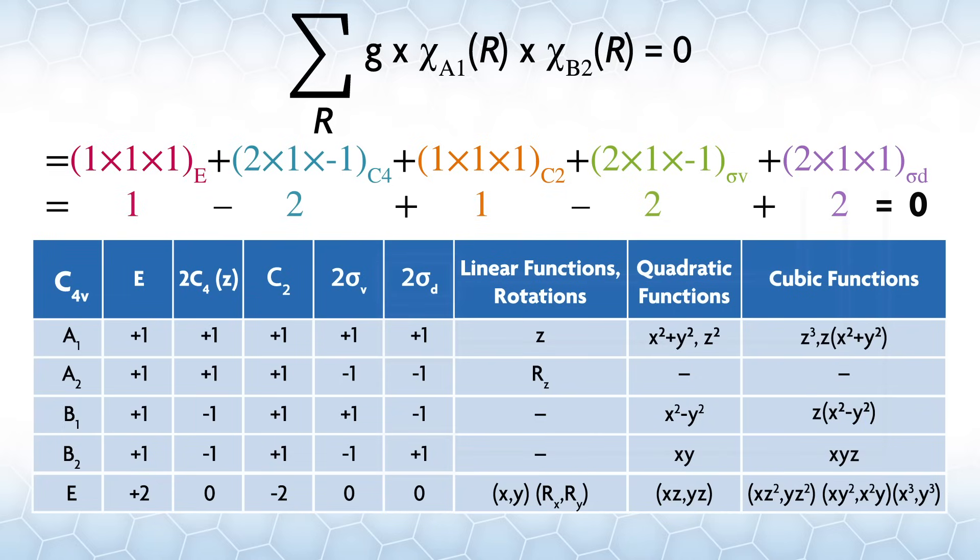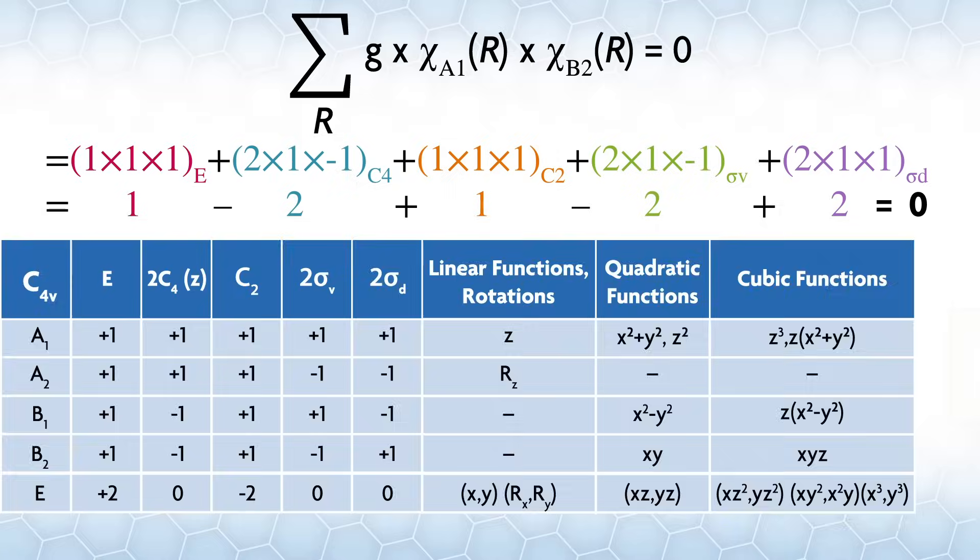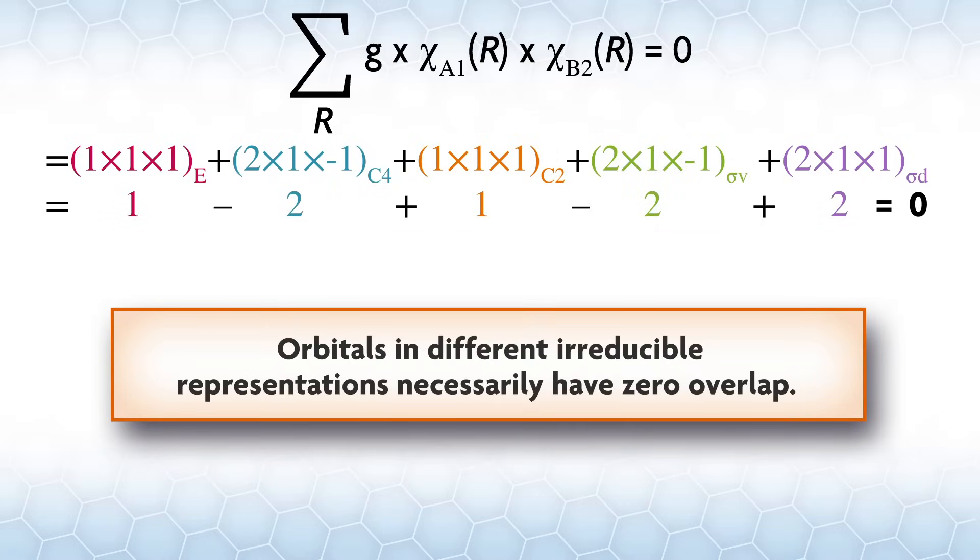This is an important property as we're going to use irreducible representations as stand-ins for orbitals. In other words, orbitals in different irreducible representations necessarily have zero overlap.